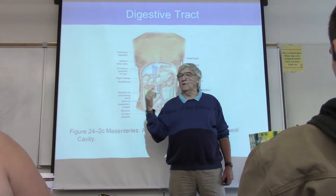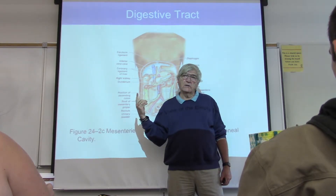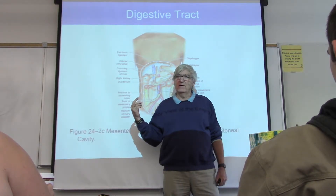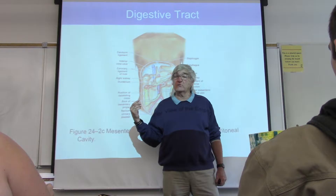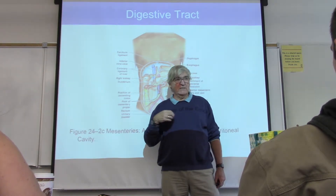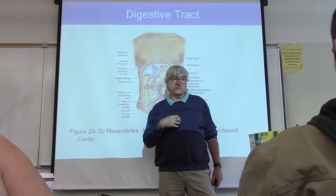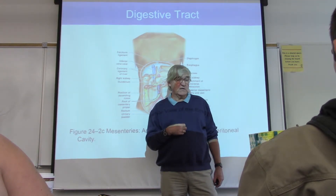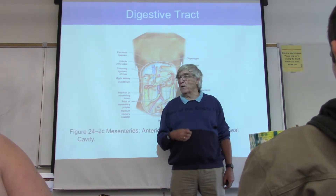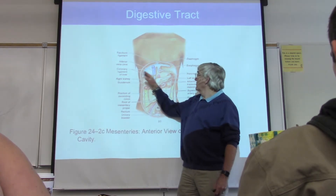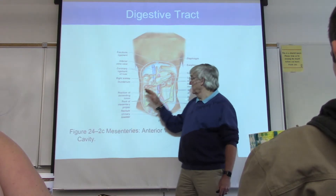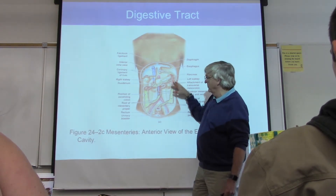The top one is called the celiac trunk. It comes off way up high, and it supplies the liver, the spleen, the stomach, all those things up top. Then the SMA, the superior mesenteric artery, supplies the entire small intestine down to the middle of the transverse colon, generally. The IMA, the inferior mesenteric artery, supplies the left side of the colon, the sigmoid over here.